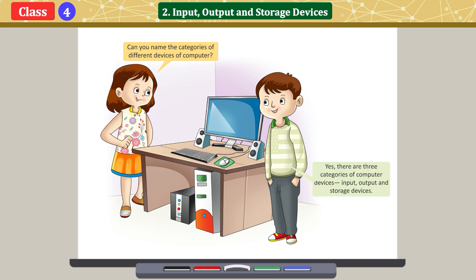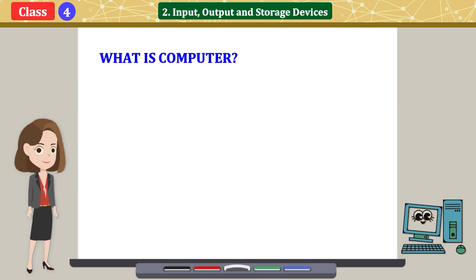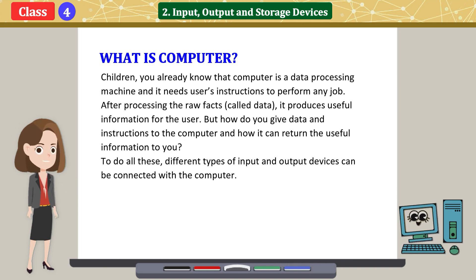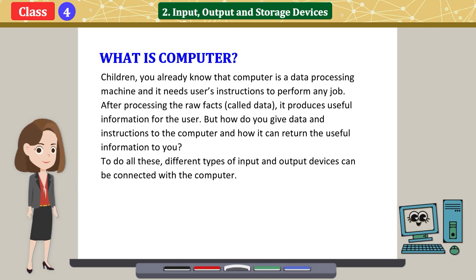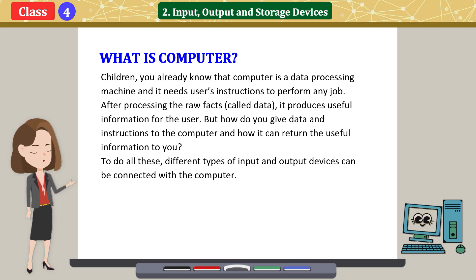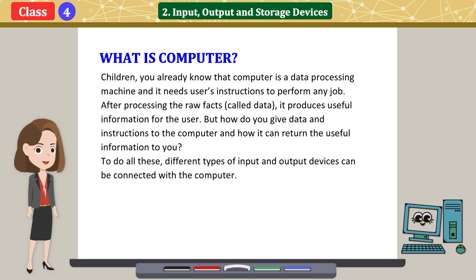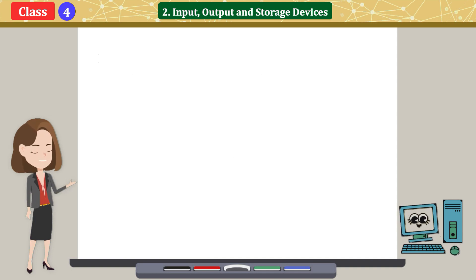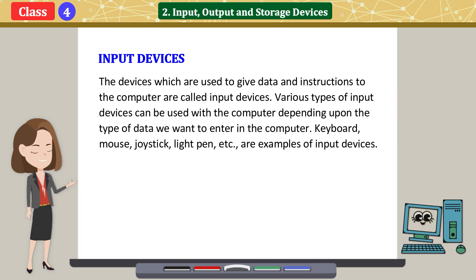There are three categories of computer devices: input, output, and storage devices. Computer is a data processing machine and it needs users' instructions to perform any job. After processing the raw facts called data, it produces useful information for the user. But how do you give data and instructions to the computer, and how can it return useful information to you? To do all these tasks, different types of input and output devices can be connected with the computer.